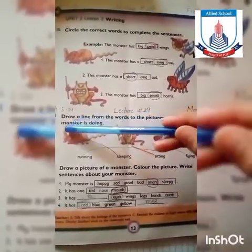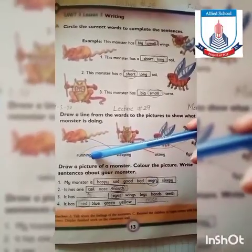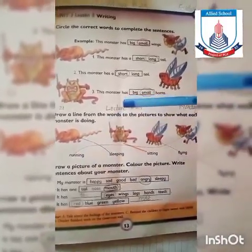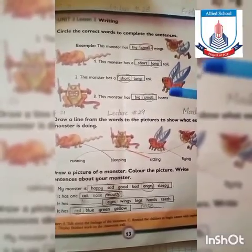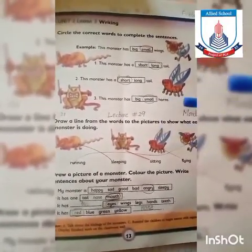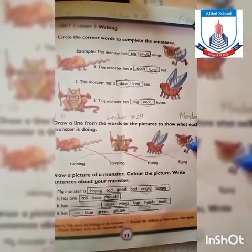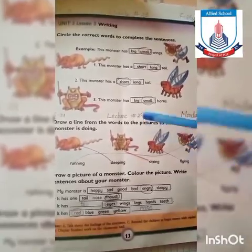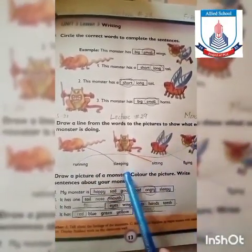The pictures of the monsters show us what they are doing. The first word is 'running.' Now we will see which monster's picture looks like the monster is running. This last picture looks like the monster is running, so we will match it with 'running.'